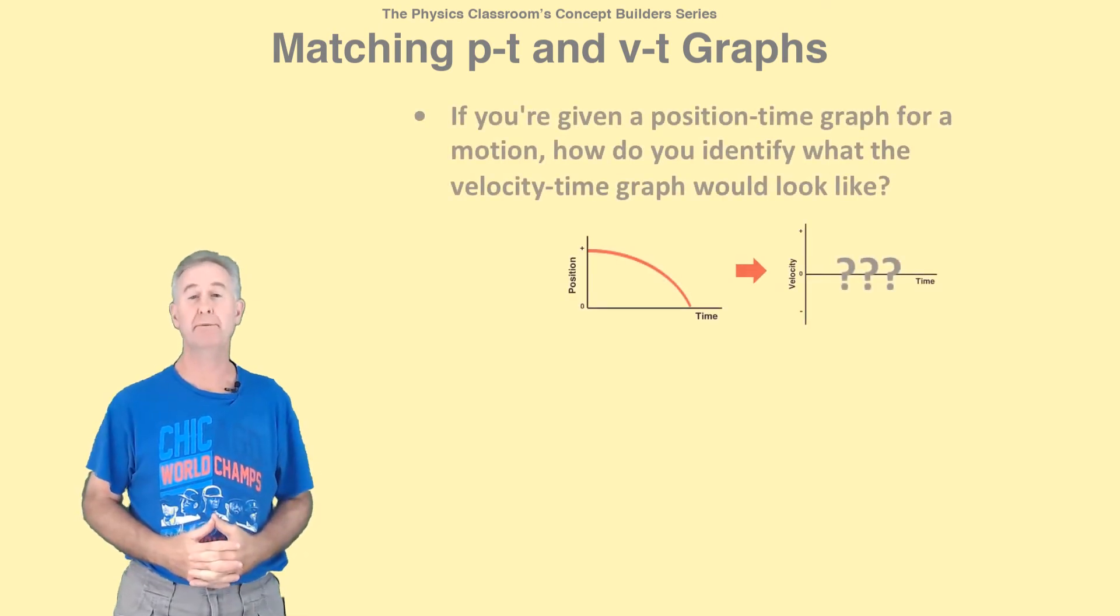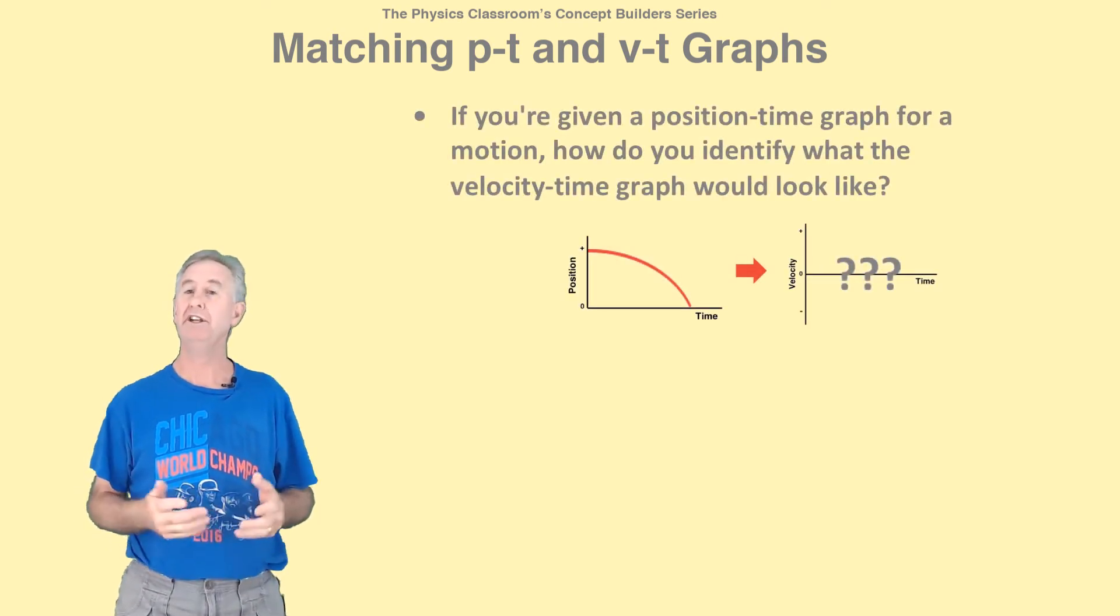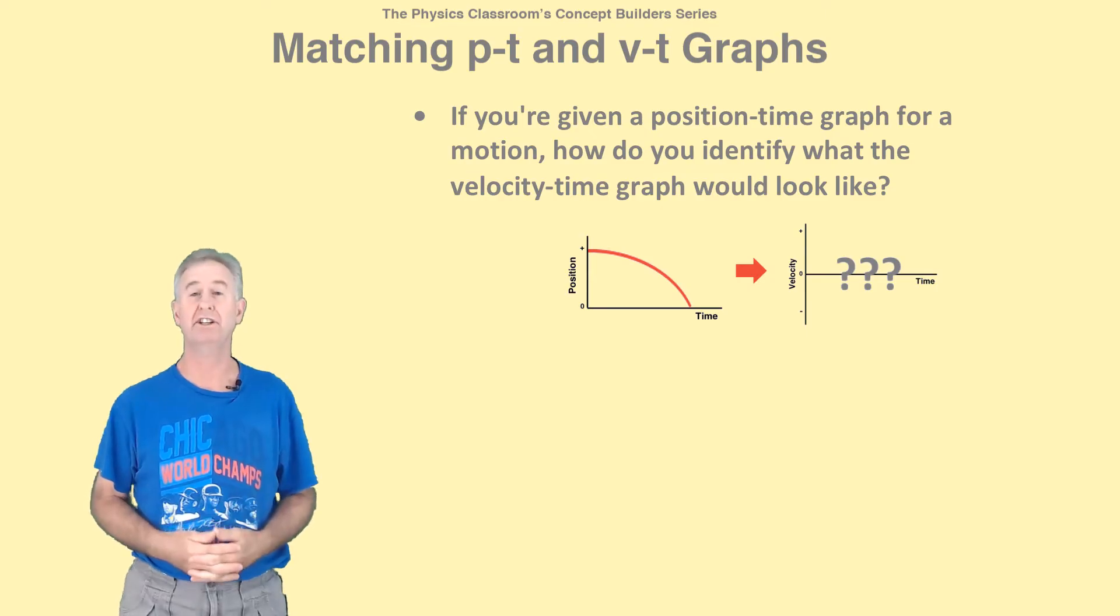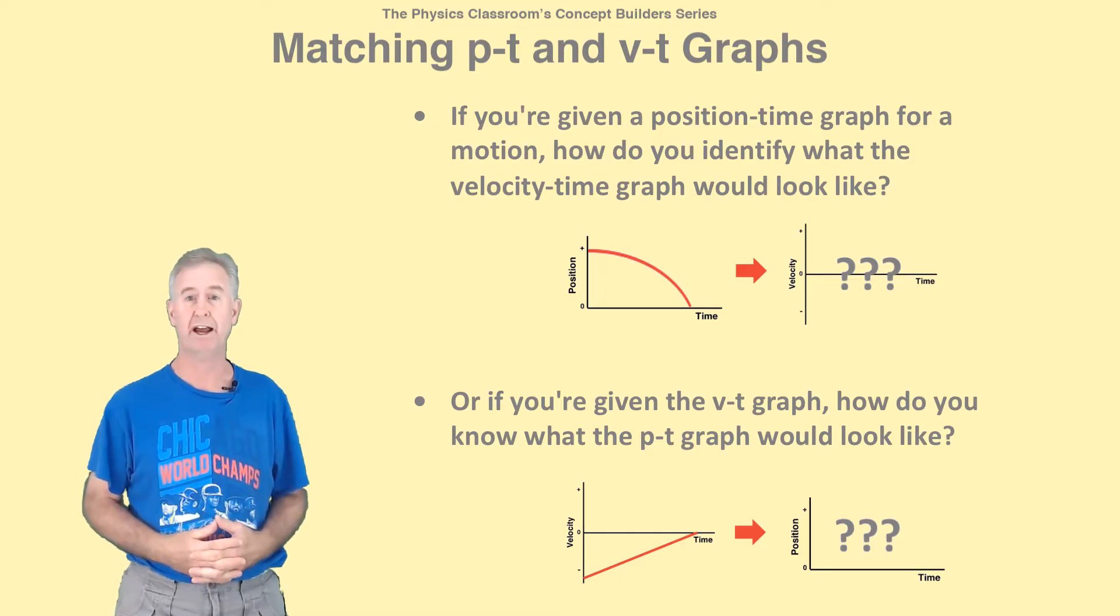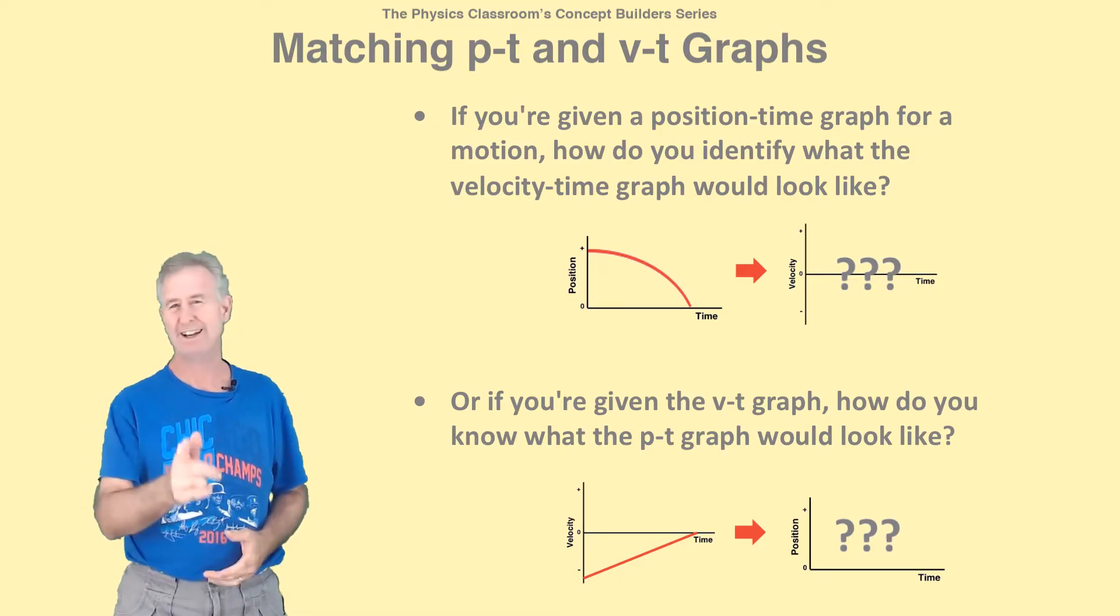If you're given a position time graph for an object's motion, how do you determine the corresponding velocity time graph? Or, if you're given the VT graph, how do you determine the matching PT graph? Well, I'm Mr. H, and I have some answers for you.